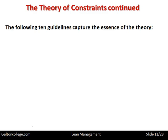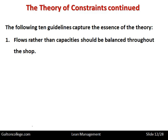The following guidelines capture the essence of the theory of constraints. The emphasis should be on the flow throughout the system, not on the capacity of the system or its individual components. We need to look at the flow: is there a bottleneck, is there a hold-up? It could be that capacity in some areas is too much, creating slack — and slack means a wasted resource.